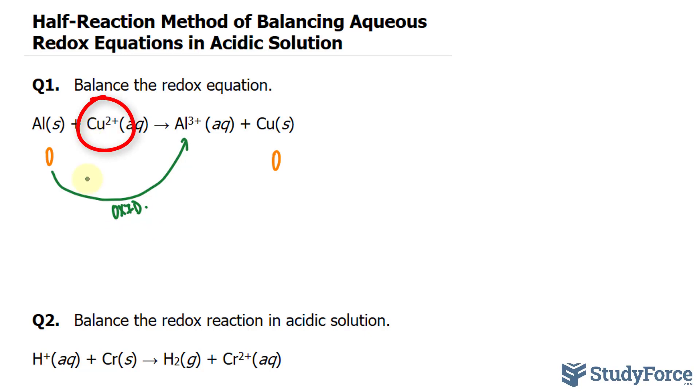This one is going from being positive to an oxidation state of zero. That means it's gaining electrons. When that happens, we have a reduction.